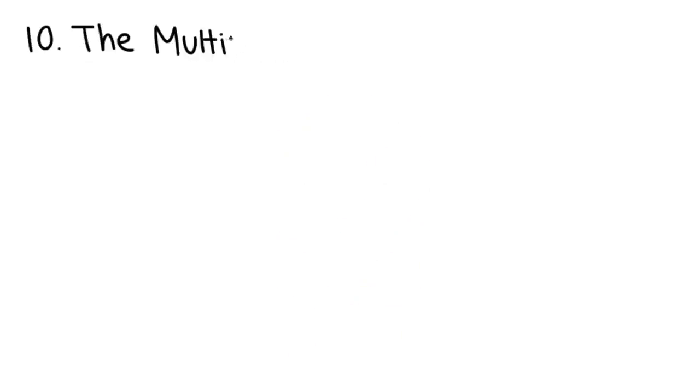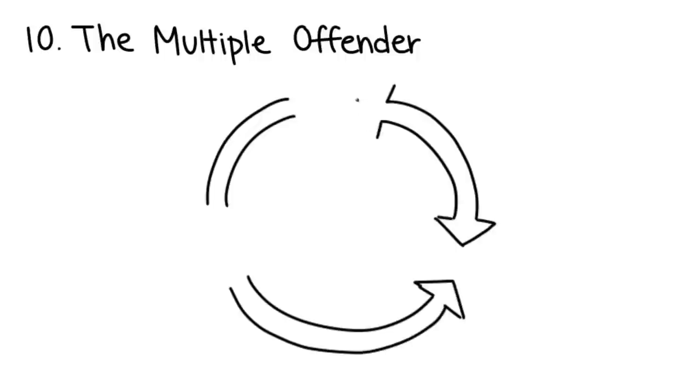Number 10: The Multiple Offender. This person uses several of the techniques we've described, and they'll often switch between the methods depending on what suits their purposes.